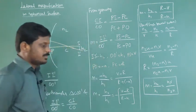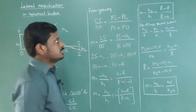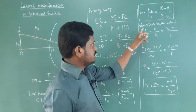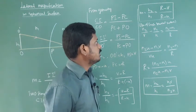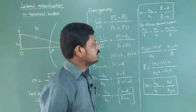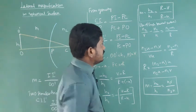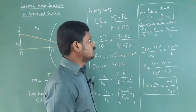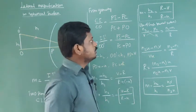We can derive in another way also. From the equation of single spherical surface, previously we discussed N₂ by V minus N₁ by U equals N₂ minus N₁ by R. Cross multiply: N₂ by U minus N₁ by V by VU.